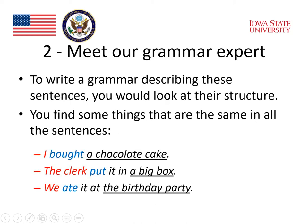To write a grammar describing these sentences, you would look at their structure. You find some things that are the same in all of the sentences. In our example sentences, we identify three things that are similar. The first one I put in red, and that is that there is a person at the beginning of the sentence.